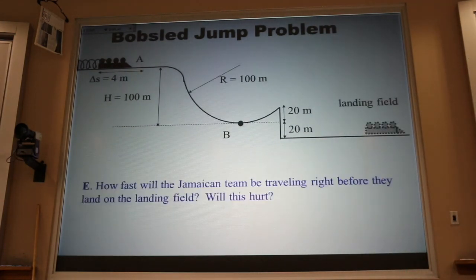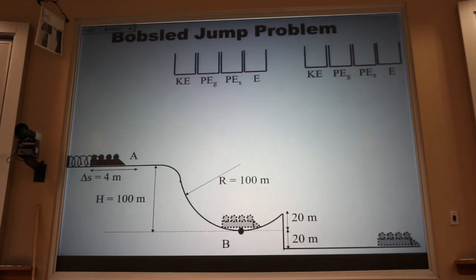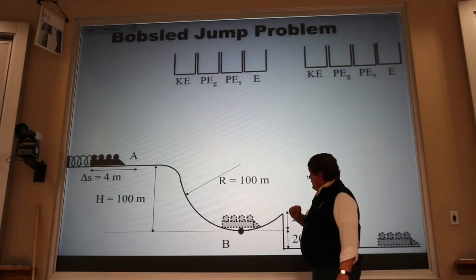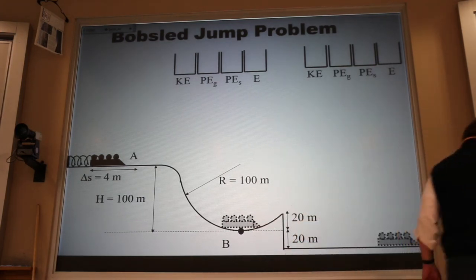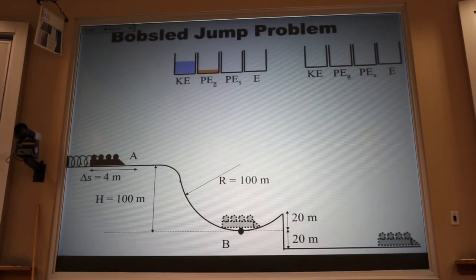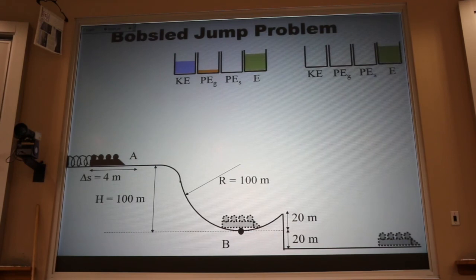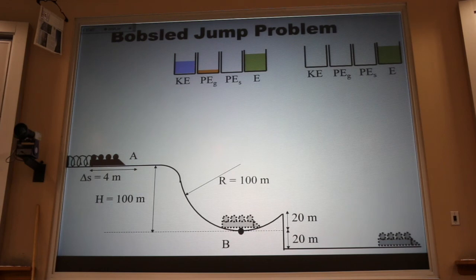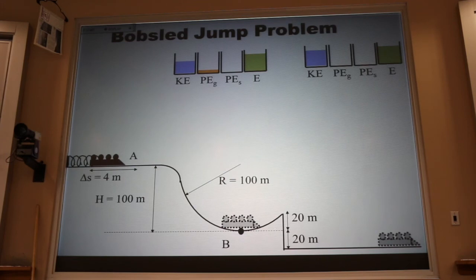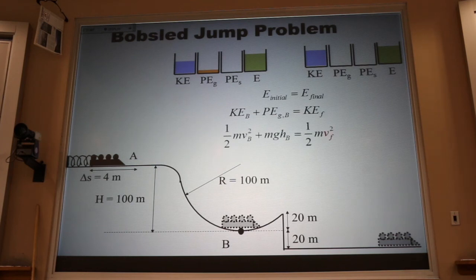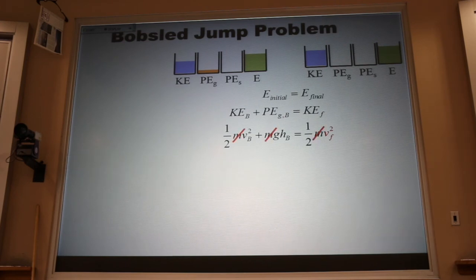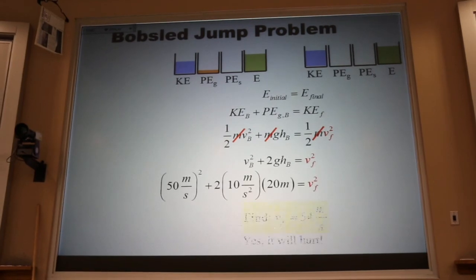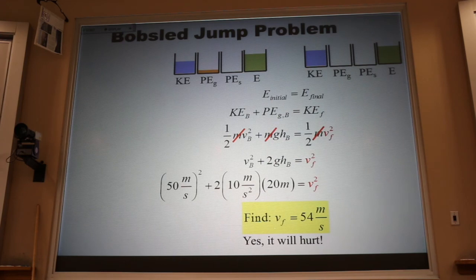Now, the last part of this problem asks, how fast will the Jamaican team be traveling right before they land on the landing field? And again, this is an energy problem. If I look at the energy at B, they're moving, so there's kinetic energy. They're up off the floor, so there's gravitational energy. The spring is neither stretched nor compressed, so there's no spring energy. That total energy is going to be conserved if we ignore air resistance. Remember, it's a frictionless ramp. And now, if we choose the height of that landing field as zero, all of the energy is in the kinetic bucket. There's no gravitational energy. I write a formula for each of those buckets. What about now? Can I cancel the mass? Yes. Every term has mass, so I can cancel it. I solve for the one unknown, and sure enough, it's going to hurt, 54 meters per second. Going pretty fast.